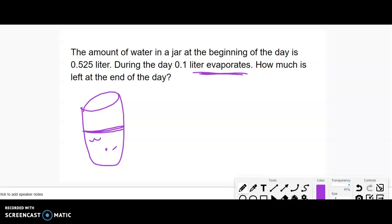Evaporate means it's changing from a liquid into a gas, so it's leaving. It's becoming less. I will have less water at the end of the day if some evaporates. So, what is 0.1 less than 0.525 liters?